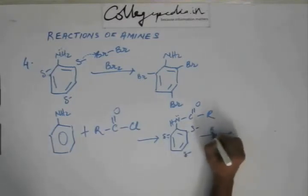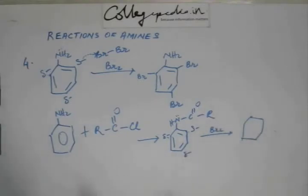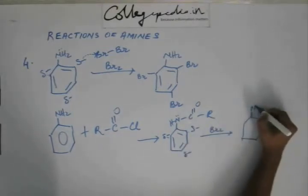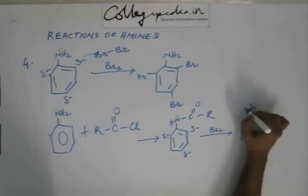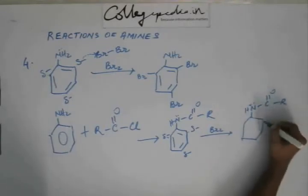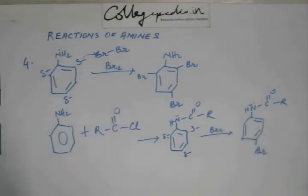So now if we add bromine, bromine will add to a single position — there will be monosubstitution of this phenyl ring. And because of steric hindrance at the ortho position due to this bulky acyl group, bromine gets attached to the para position.